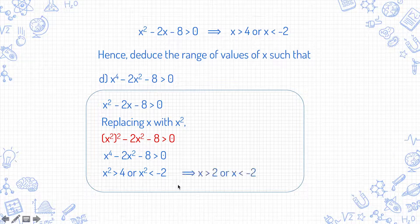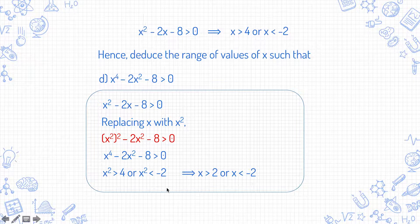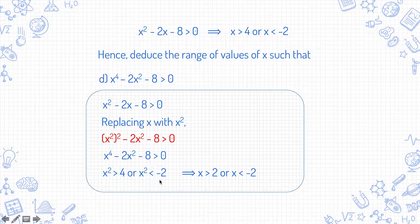If x² > 4, it means that x > 2 or x < -2. And there is no real solution for x² < -2, because square numbers have to be greater than or equal to 0.